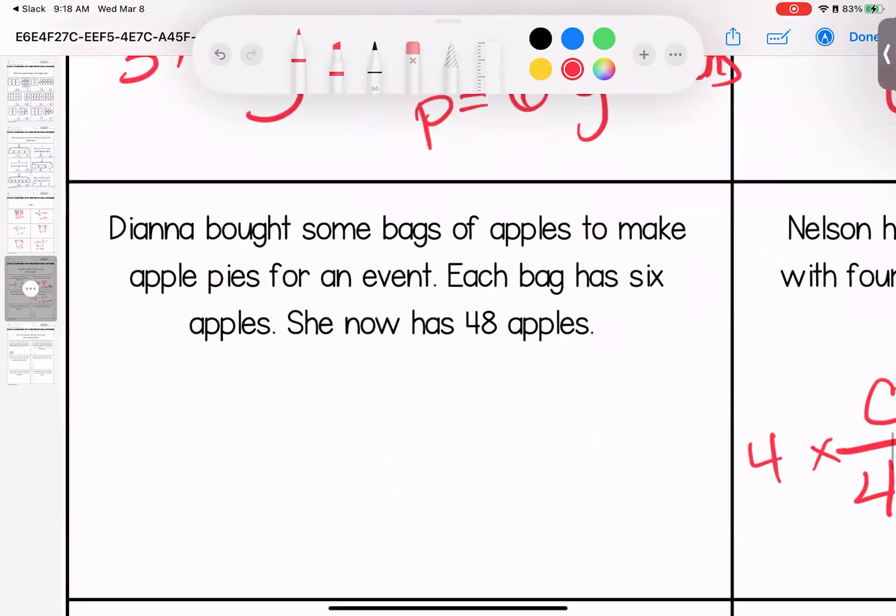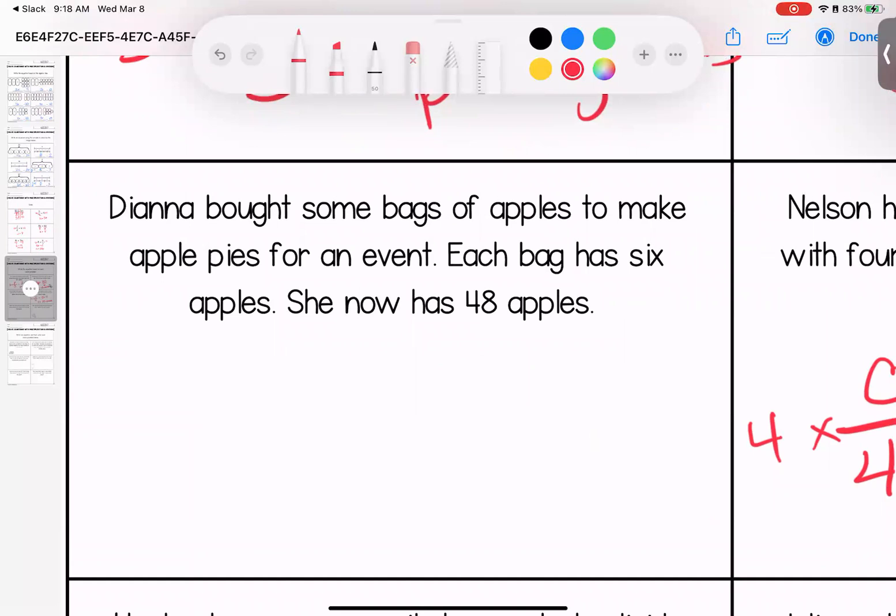Over here, Diana bought some bags of apples to make apple pies for an event. Each bag has six apples. She now has 48 apples. So she has six bags of apples. When she opened them, she had 48 apples. But I want to know how many apples were in each bag. Sticky numbers, I divide. Each bag had 8 apples.